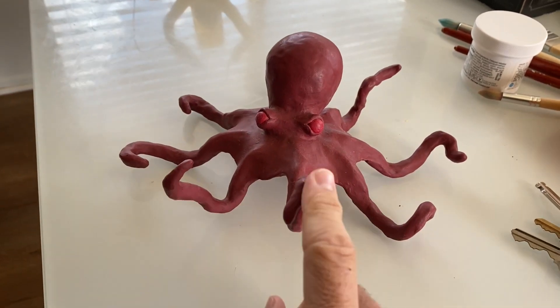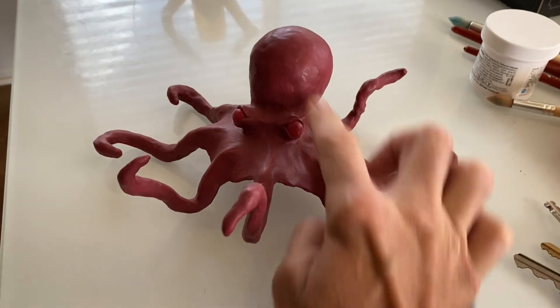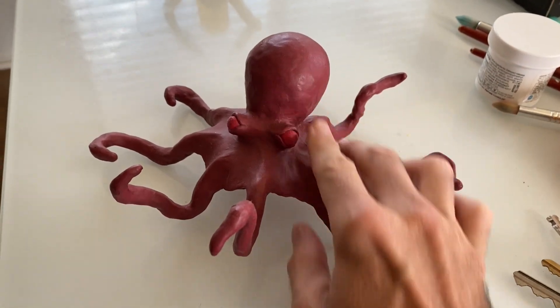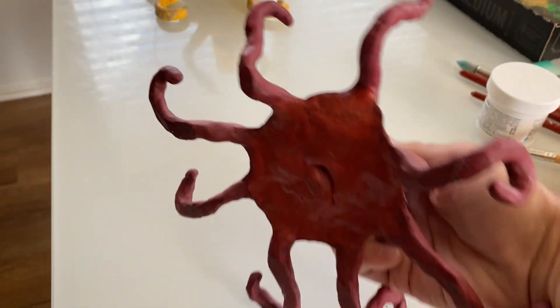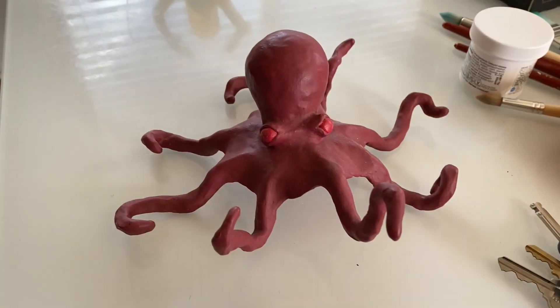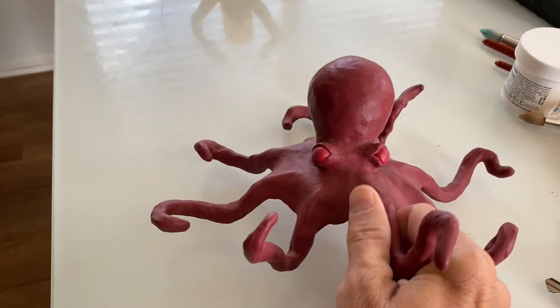He's a good octopus. I used a wire armature, created a wire armature and then covered it in Sculpey and then painted it. And so this is my first octopus that I did. It's a steel wire armature. Pretty tough guy.